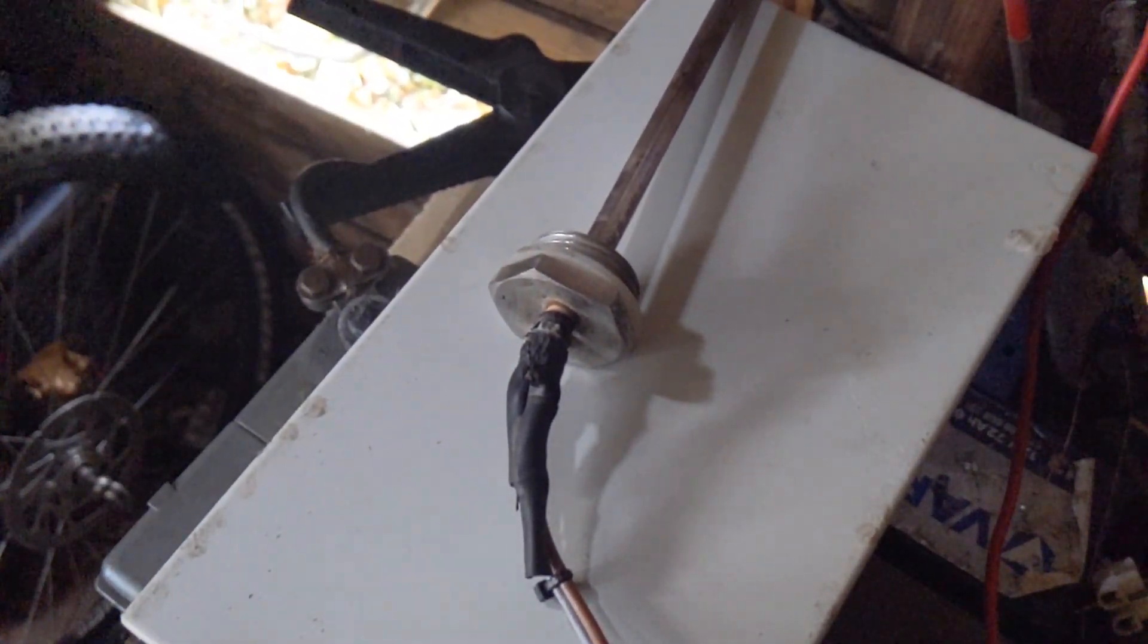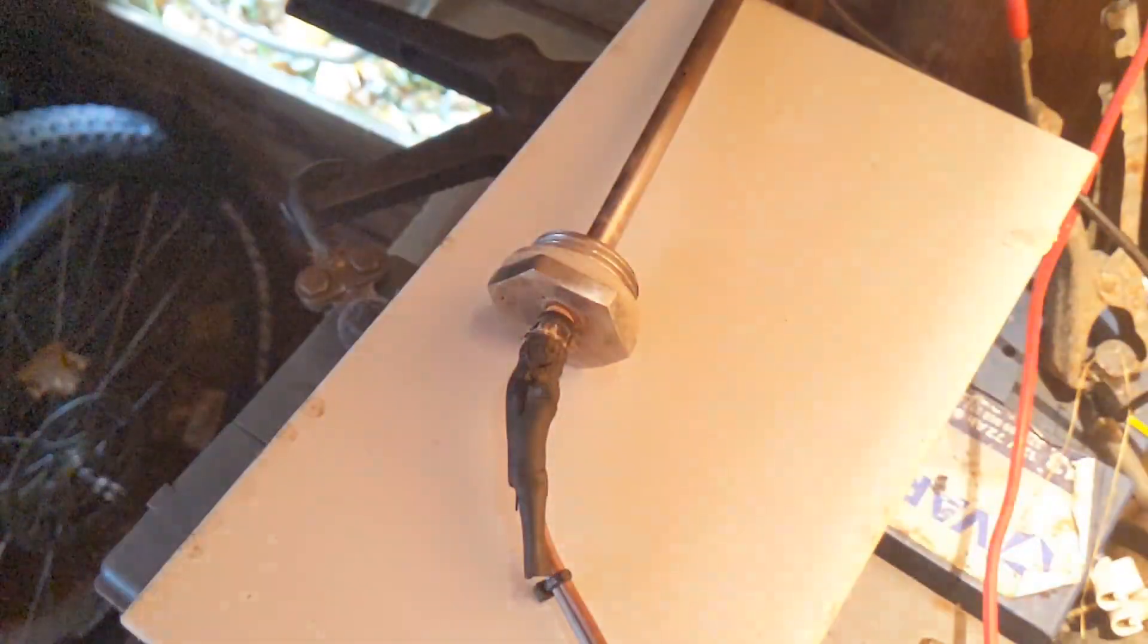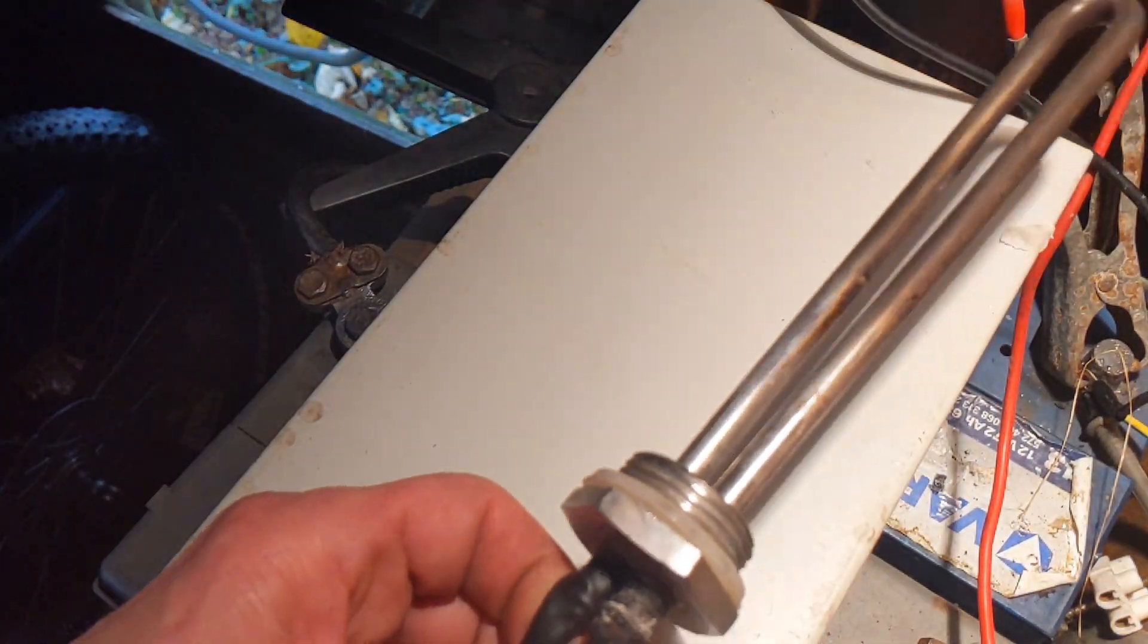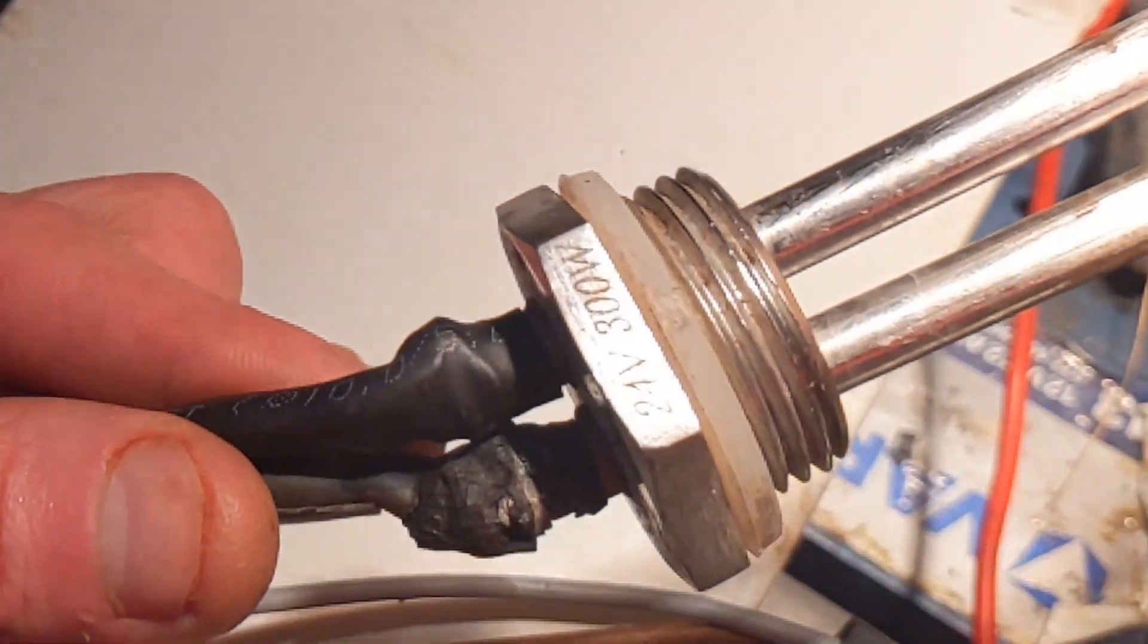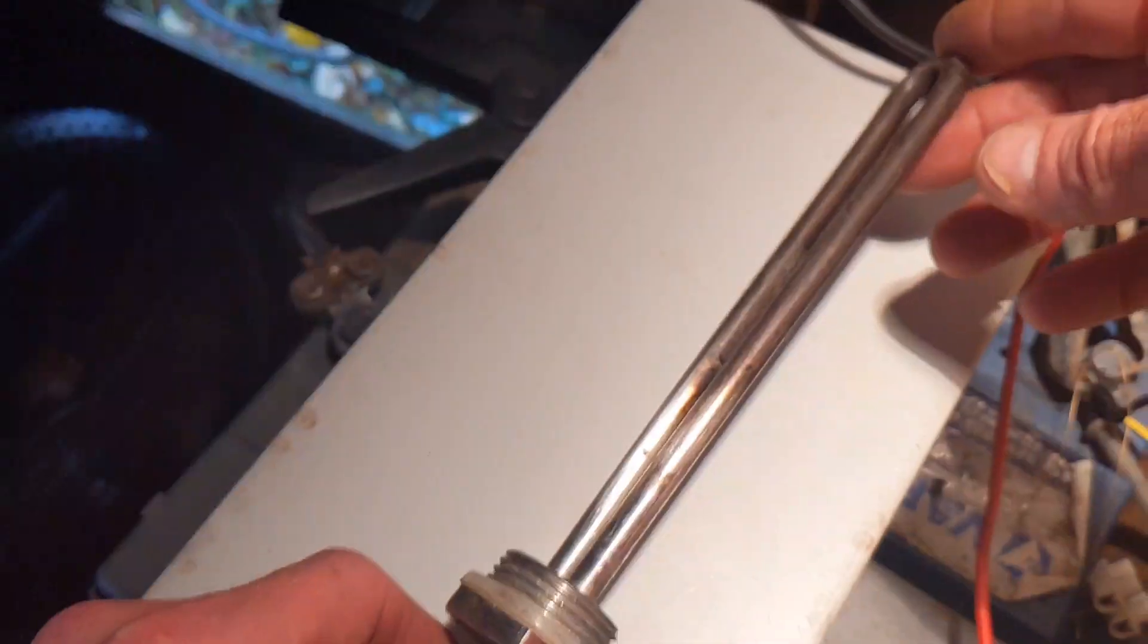This dump load, according to the information on the side, is a 300 watt 24 volt unit. The whole purpose of this experiment is to see how much exactly that dump load uses. There isn't hardly any wind coming in.